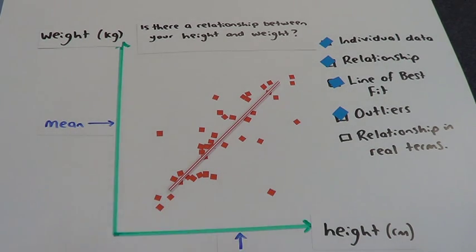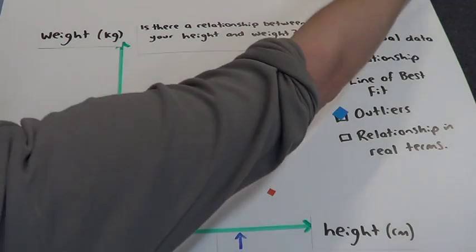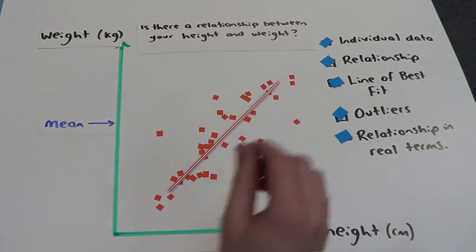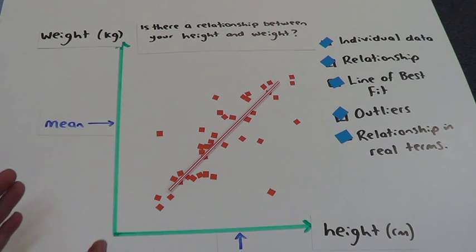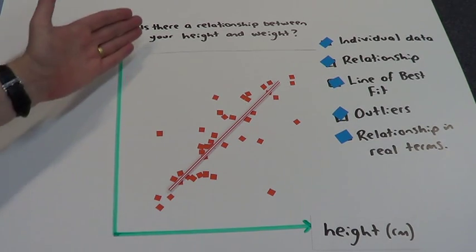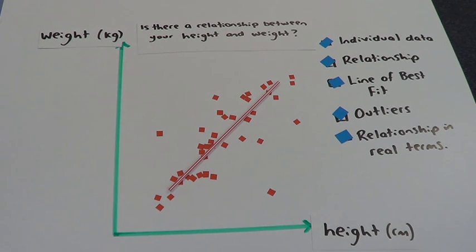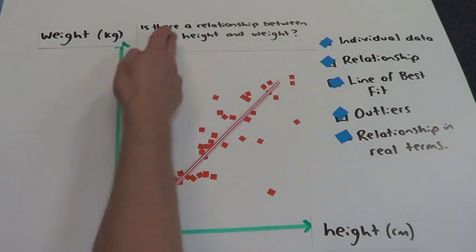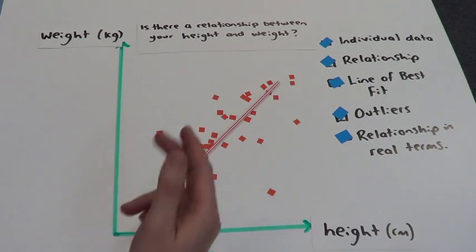The relationship in real terms. This is the final piece of the puzzle when we're doing these ones. What we need to do is describe what is actually happening in regards to weight and height.